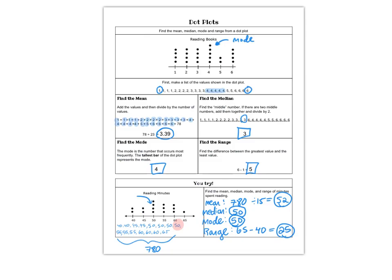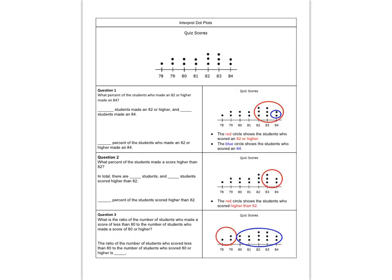So now that we've talked about how to use dot plots to find the mean, median, mode, and range of a set of data, let's talk about different ways to interpret data from a dot plot. So this one shows us quiz scores from a class, and here we're just asked some questions about it.